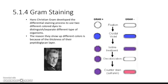Gram staining was first discovered by Hans Christian Gram. He developed this staining method. It's called a differential stain because it stains bacteria two different colors depending on what kind it is. We have gram positive bacteria which shows up as purple or purplish blue, and gram negative bacteria that looks pinkish red.